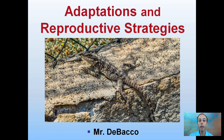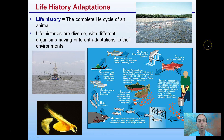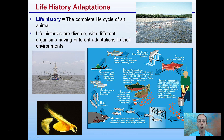Here we're going to look at adaptations and reproductive strategies. Starting with a life history of adaptations in general — life history is a complete life cycle of an animal. Here we're looking at the salmon. Life histories are diverse, with many different organisms having different adaptations to their environments.